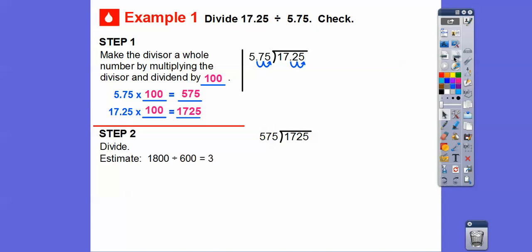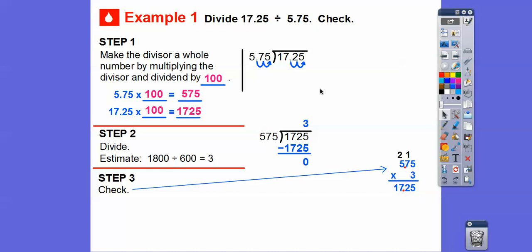Let's estimate. I know 1725 is close to 1800, and 575 is close to 600. So 1800 divided by 600 is 3. So as long as we get an answer close to 3. Here we multiplied 575 times 3, and it gave us 1725, so that's going to be our answer. Let's check. 5.75 times 3 gives us 1725, but then we move the decimal back two places, which gives us 17.25. That's how we check our answer.